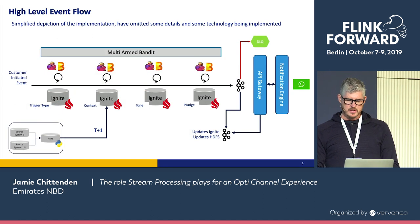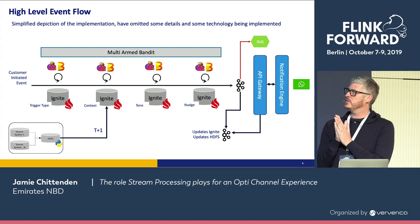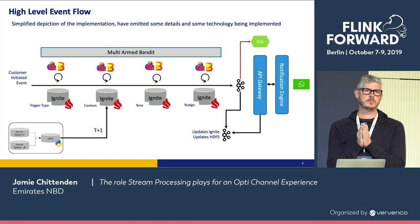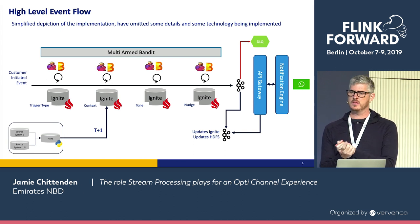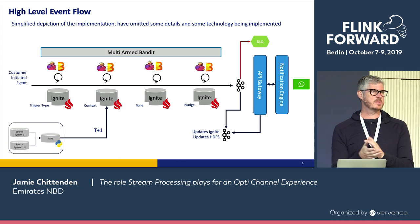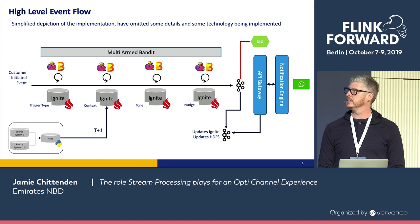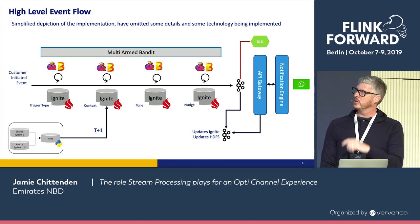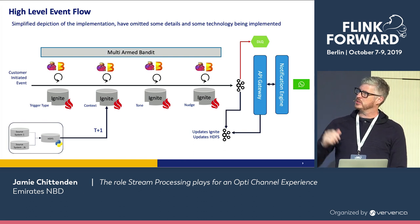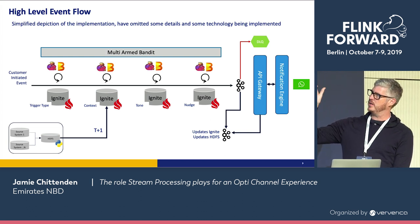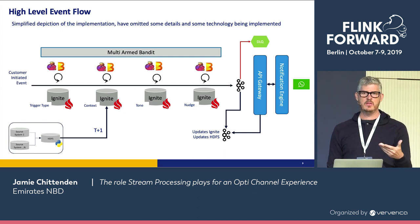So what we've got now is this. Based on the high-level requirements, we needed a very fast, extremely quick read and write database. We looked at HBase — it wasn't up to standard. We looked at Cassandra — we didn't really like that. And we landed on Apache Ignite. On top of that, we've also got Beam and Flink running, and then the multi-armed bandit over the top. The trigger type: there are four different inputs that go into the multi-armed bandit — the trigger type, the context, the tone, and the nudge.